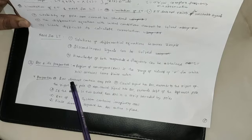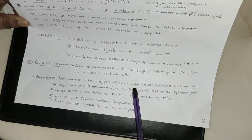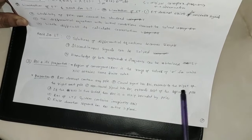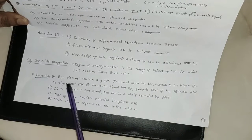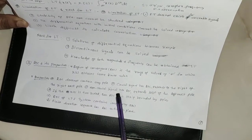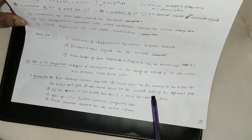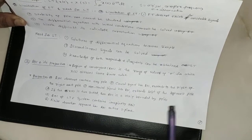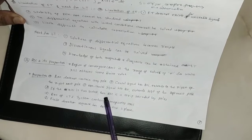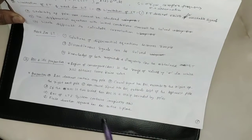First, ROC does not contain any pole. Second, a causal signal has ROC that extends to the right of the rightmost pole. For a non-causal signal, ROC extends to the left of the leftmost pole. If x of t is a two-sided signal, then ROC is a strip bounded by poles.